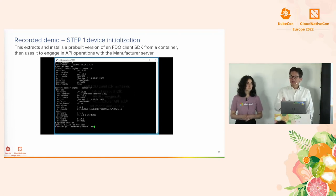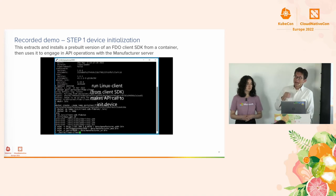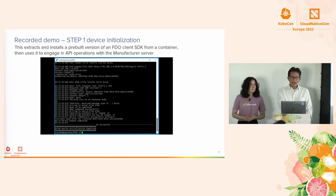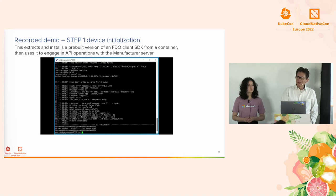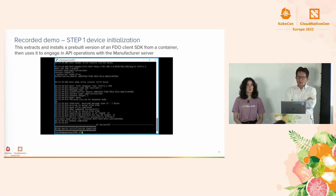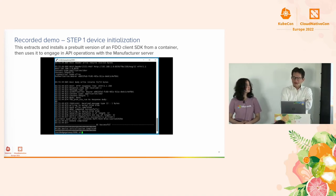This is a recorded demo, sped up a little, showing the manufacturer process. I started with Ubuntu, installed Docker, and used a published Docker image with the client SDK so I didn't have to build it. I invoke a script on that client SDK that generates keys for the device, contacts the manufacturer server, gets the data burned into the TPM module, and makes a record of this device being manufactured — recorded on the manufacturer server. I want to shout out to Anthony LaPena of Portainer for helping me out with this demo, as I used a Docker container he built.